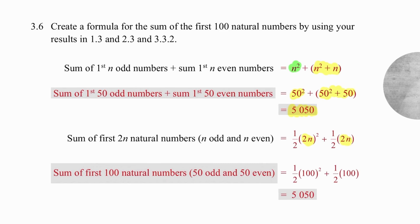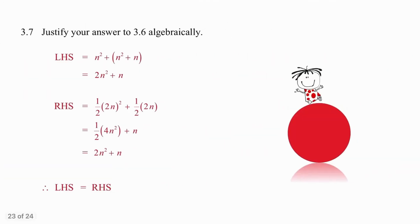Simplifying that answer out gives us 100 when n is taken as 50, as we substitute here, and we get the same result of 5050. To look at that complicated explanation one more time, n squared represents n odd numbers. n squared plus n represents the sum of n even numbers, giving us the result of 2n squared plus n.